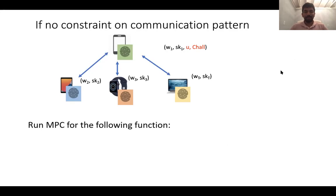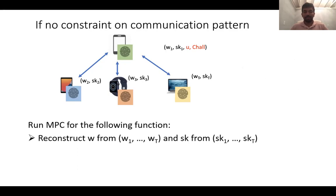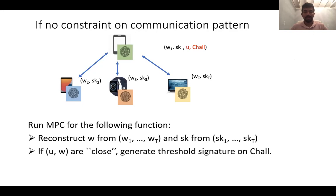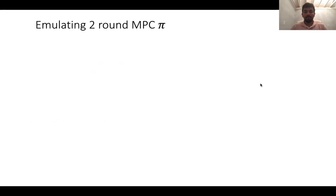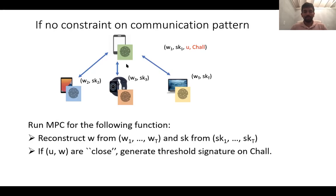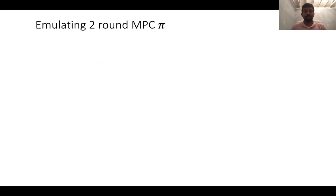If there was no constraint on the communication pattern, we could just run an MPC amongst all these t parties for the following function. Each of these t devices uses as input their share of the signing key and the template. The initiator additionally uses the challenge and the measurement as input. The MPC simply reconstructs the template w and the signing key sk. If the measurement and w are close according to the underlying distance metric, then it generates the threshold signature. But the real challenge here is we want to do all of this only using the star network communication model, and also we want to ensure that only one signature is produced each time.